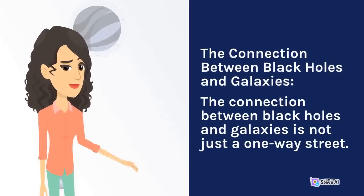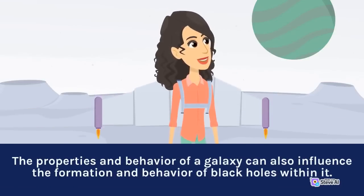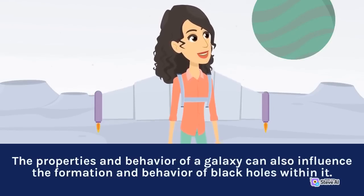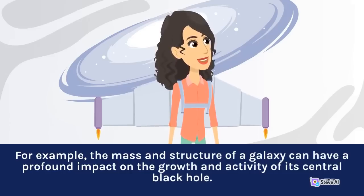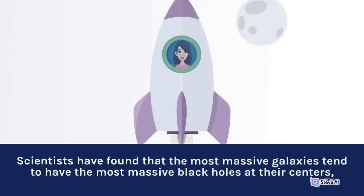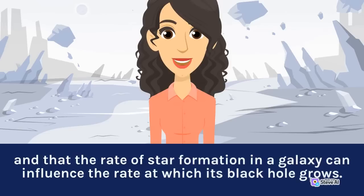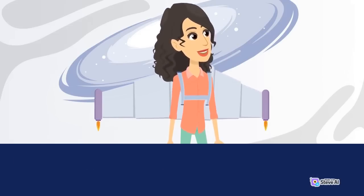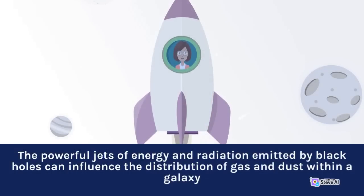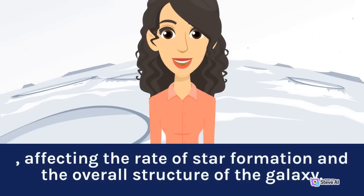The connection between black holes and galaxies is not just a one-way street. The properties and behavior of a galaxy can also influence the formation and behavior of black holes within it. For example, the mass and structure of a galaxy can have a profound impact on the growth and activity of its central black hole. Scientists have found that the most massive galaxies tend to have the most massive black holes at their centers, and that the rate of star formation in a galaxy can influence the rate at which its black hole grows. The powerful jets of energy and radiation emitted by black holes can influence the distribution of gas and dust within a galaxy, affecting the rate of star formation and the overall structure of the galaxy.